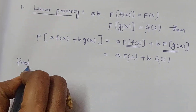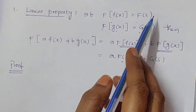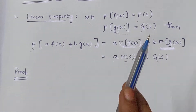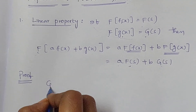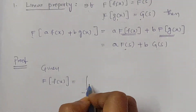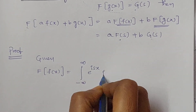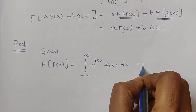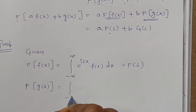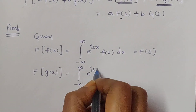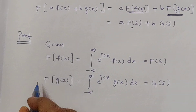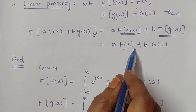The proof: the if-condition means the given information is that the Fourier transform of f of x and g of x exist. So given: Fourier transform of f of x equals the integral from minus infinity to infinity of e power isx times f of x dx, written as capital F of s. Fourier transform of g of x equals the integral from minus infinity to infinity of e power isx times g of x dx, written as capital G of s. We have to prove the Fourier transform of the combination equals the right-hand side.